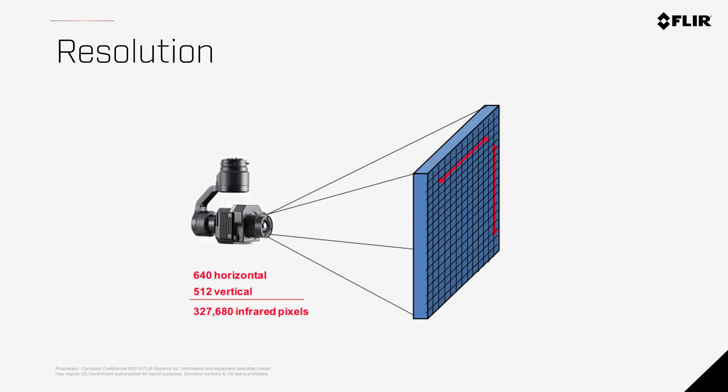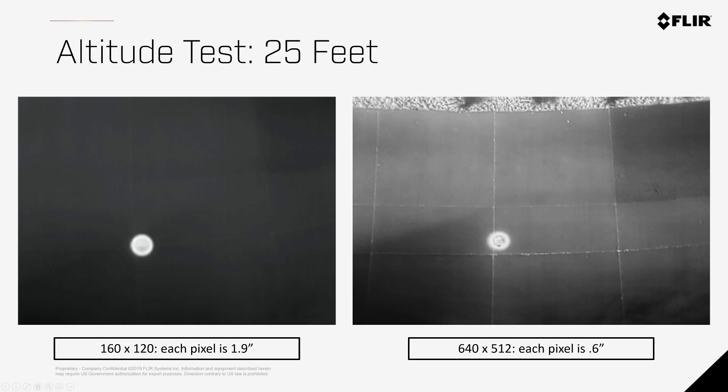Now we'll discuss further why resolution is important whether you're doing mapping missions or not. Here we have a 160x120 image on the left, similar to what you might expect from a Mavic 2 Enterprise Dual or similar airframes, and a 640x512 on the right, and this is done at the same altitude of 25 feet. Keep in mind this is not an ideal height for doing mapping missions due to the time it would take to inspect a large area. The target is an 18-inch pizza pan warmed up to give good contrast between the pizza pan itself and the pavement. Although the target is apparent in both images, you can see that there's greater clarity and detail when you have more pixels, like the image on the right.